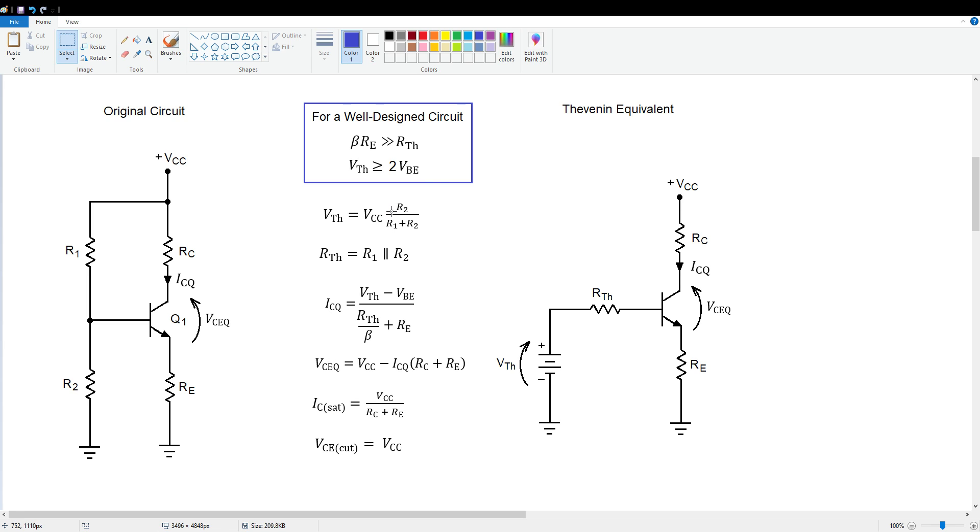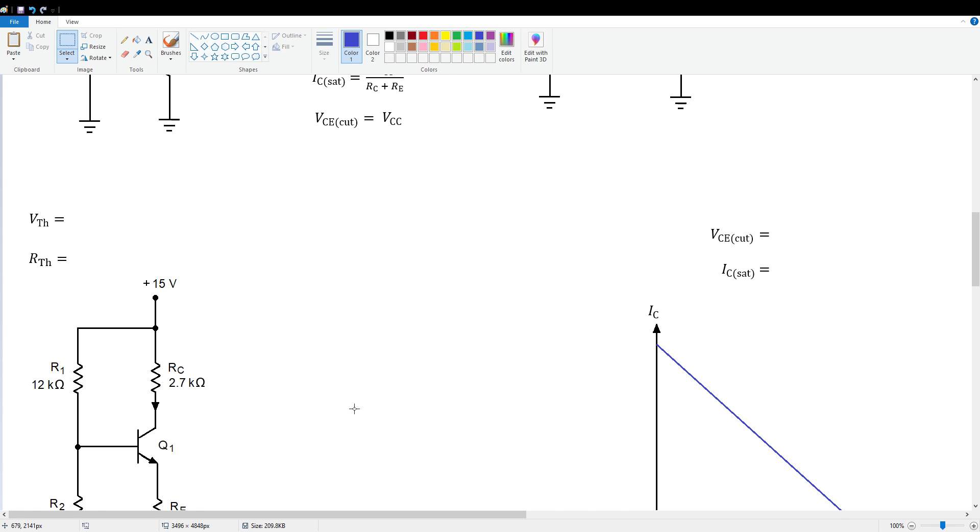In the middle of the schematics, I put all the pertinent analysis equations that we've derived previously. A bunch of them are already totally beta independent. That is VTH, RTH, ICSAT, and VCE cutoff. These are not affected by beta at all. The ones that are affected are ICQ and VCEQ. Let's go down and apply this information to a practical example.